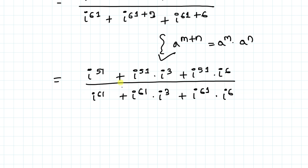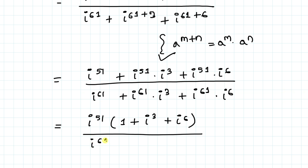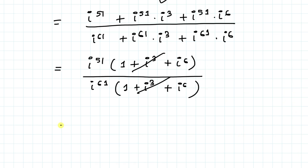I can easily take iota to the power 51 common in the numerator and iota to the power 61 common in the denominator. So I can write: iota to the power 51 times (1 plus iota cubed plus iota to the power 6), divided by iota to the power 61 times (1 plus iota cubed plus iota to the power 6). Both bracket terms are the same, so they cancel out, leaving us with iota to the power 51 divided by iota to the power 61.